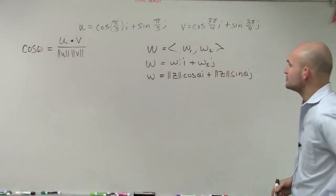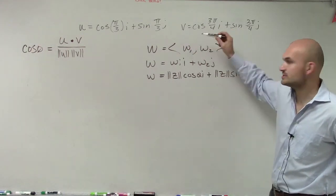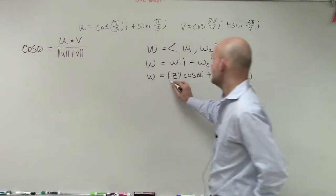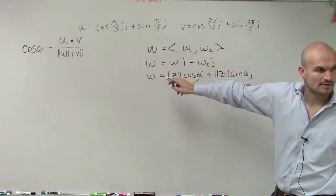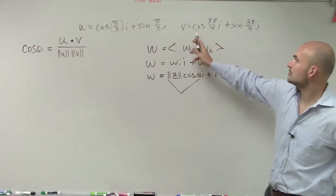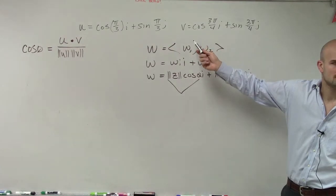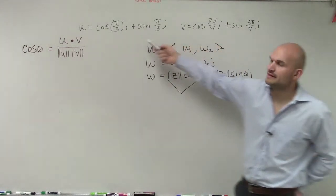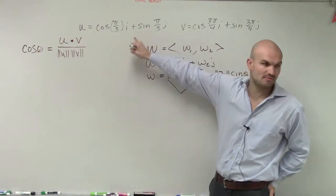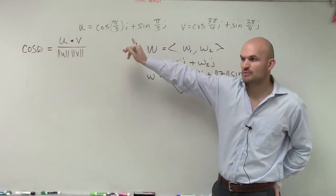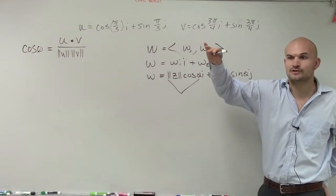So what we need to do is first determine what our coordinate points are. Notice that the magnitude times cosine of theta equals w1. So looking at our vectors — cosine of 3π/4, is that being multiplied by any magnitude? No. So you could say the magnitude of v and the magnitude of u are both equal to 1, because they're not being multiplied by a number like 5 or 10. So u and v are both unit vectors — their magnitude is 1, and they land on the unit circle.